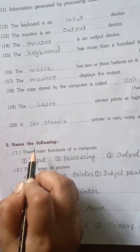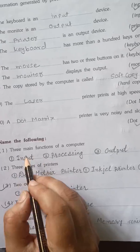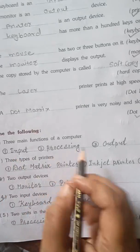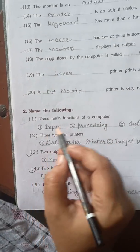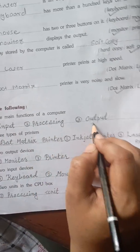Next, name the following. Three main functions of a computer. So what are the three main functions of computer? Number one input, number two processing, number three output. Understand? What are our three main functions of computer? Input, processing, and output.